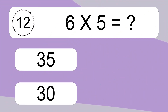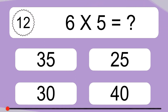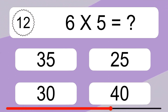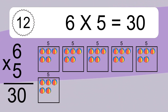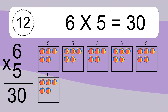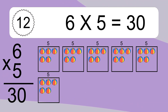6 times 5 equals what? 6 times 5 equals 30. We have 6 boxes and each box has 5 colorful balls inside. If you count all the balls in all the boxes together, you will have 6 times 5 balls. This equals 30 balls.